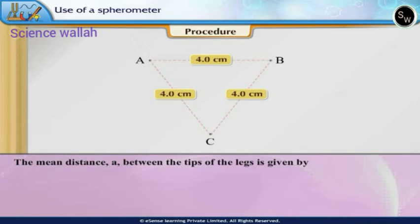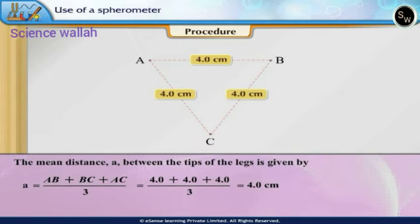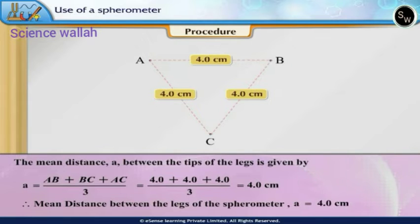The mean distance A between the tips of the legs is given by A = (AB + BC + AC)/3 = (4.0 + 4.0 + 4.0)/3 = 4.0cm. Therefore, mean distance between the legs of the spherometer A = 4.0cm.